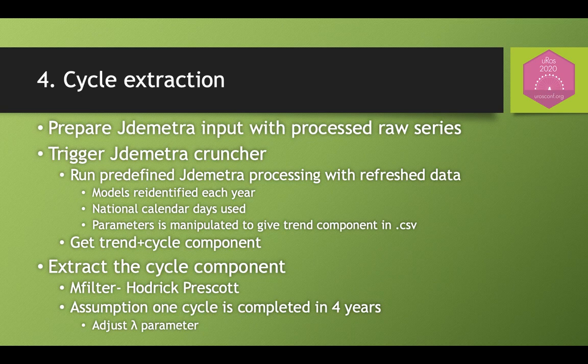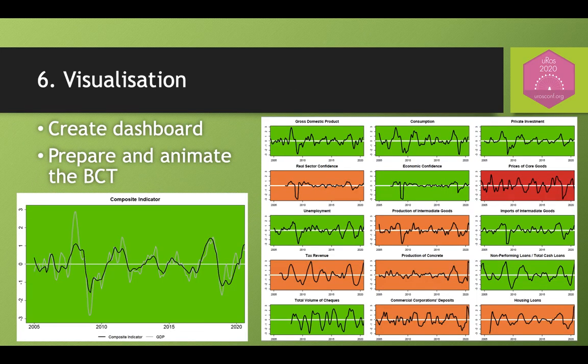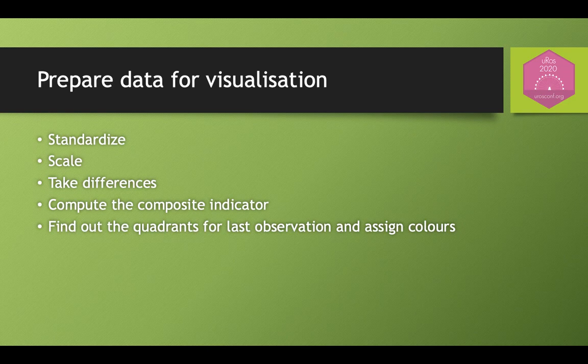Now there is only one step to extracting the cycle, which is the Hodrick-Prescott filter, adjusted to filter a cycle completing approximately 4 years. Then the script carries on standardizing, scaling, and differencing the cycle component. It also computes the composite indicator as an average of all indicators except the GDP. Depending on the last observations, the color of the quadrant is determined and recorded in a table to be used as the background in the dashboard charts.